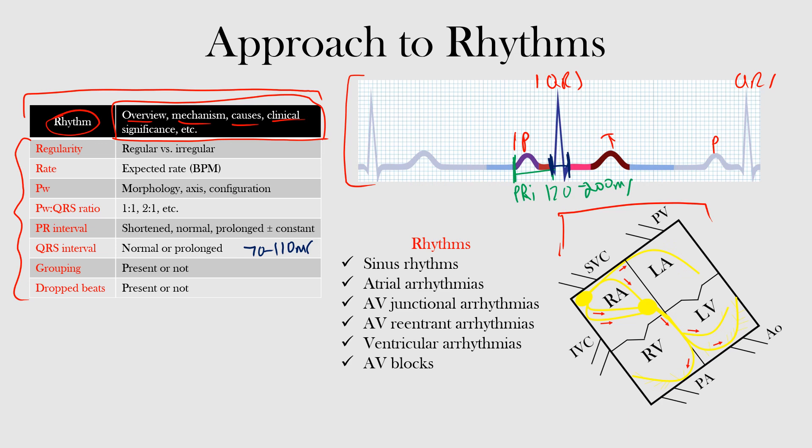Then we'll look at grouping - are there some beats that are occurring together or not? We'll see how that affects different rhythms. Are there dropped beats? In other words, is there a beat that comes and then nothing else happens and then again something fires? We'll see why that beat dropped and what kind of rhythms have dropped beats present.